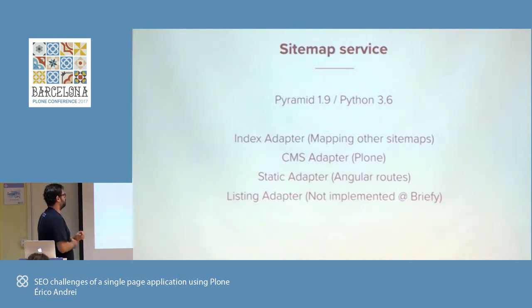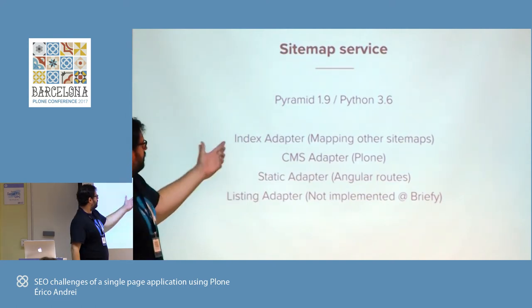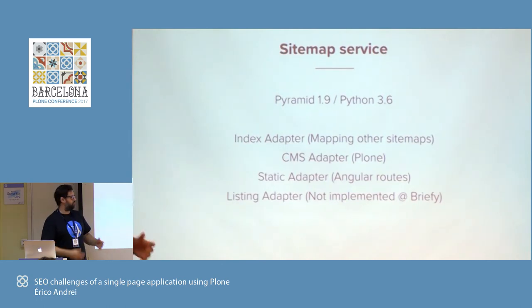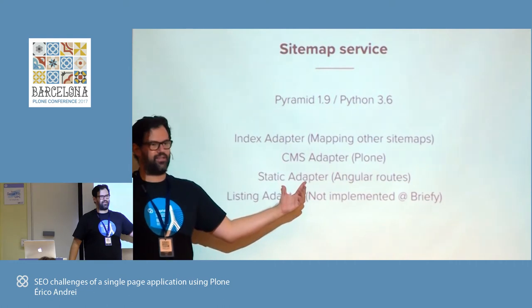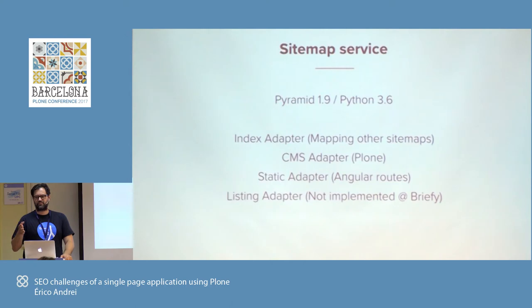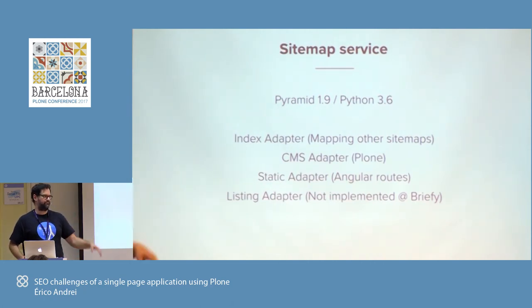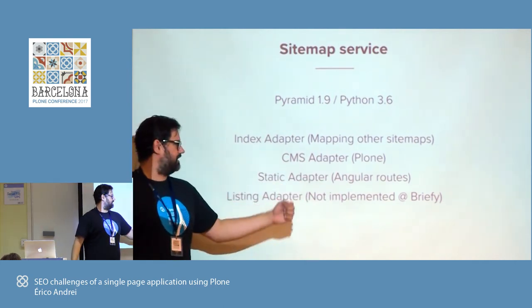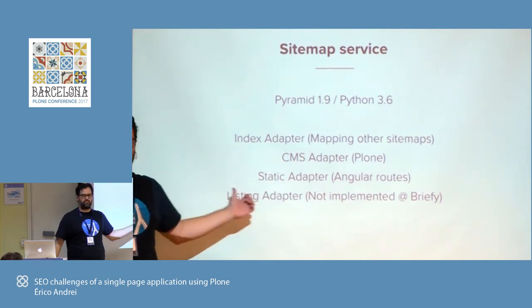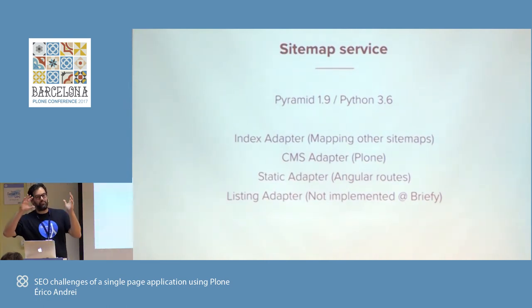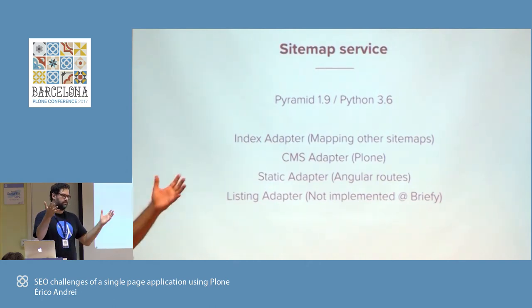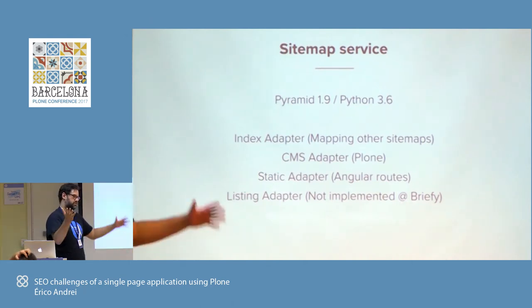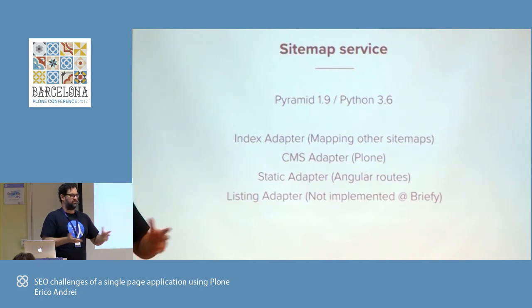We have this small service running Pyramid 1.9, latest Python. It's a view with an index adapter to generate the sitemap index, a CMS adapter pointing to Plone, and a static adapter which is a bunch of small rules — like slash imprint, which all German companies need to have on their site and it's not something you change every single week, so put it on the front end. Or any form you have, or error pages if you want. Then a listing adapter — in the previous company this would talk to the main API, get all the car listings, get last-modification information, cache it periodically, and generate a new sitemap.